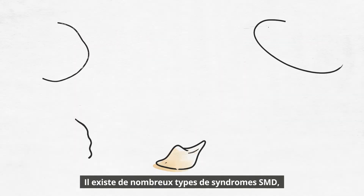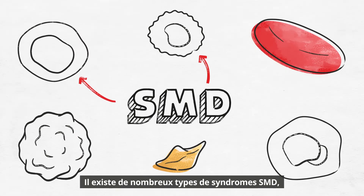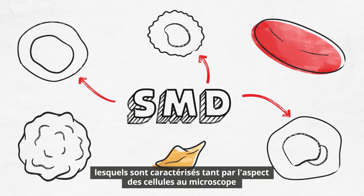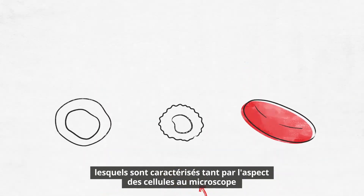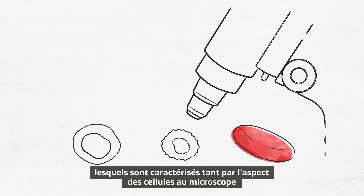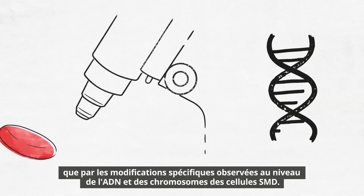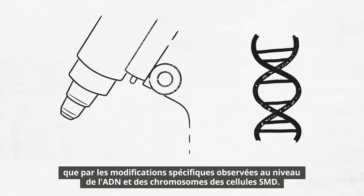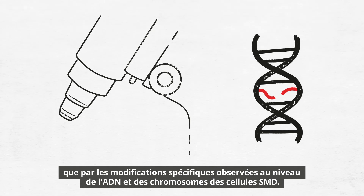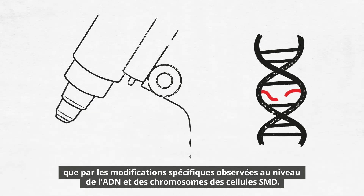There are many different types of MDS, which are defined by both the appearance of cells under the microscope and by the specific changes seen in the DNA and chromosomes of the MDS cells.